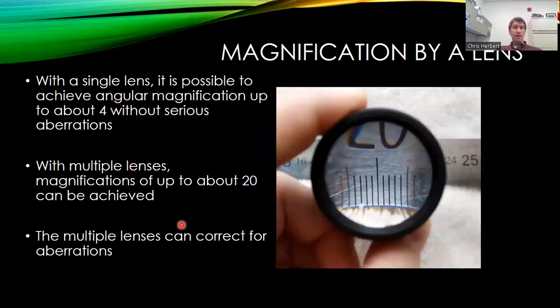Now, with a single lens, you could probably get away with an angular magnification to about 4 without too serious of an aberration. But when we're using multiple lenses, magnifications of up to about 20 can be achieved, but here you can start seeing the edges of this field are experiencing quite a bit of distortion. It's quite a bit of aberration.